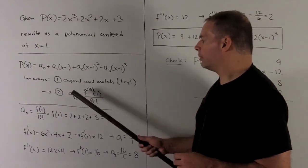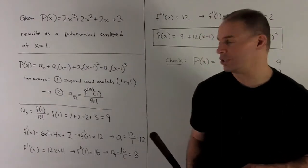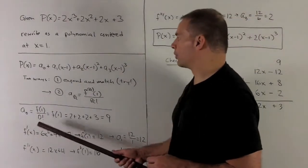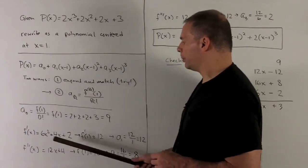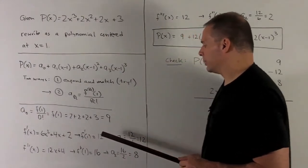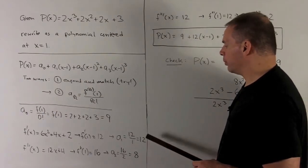All right. For a₁, take the first derivative, evaluate at 1, divide by 1 factorial, which is 1. First derivative is 6x² + 4x + 2. Put a 1 in there, that gives me 12. And then that gives me a₁ is 12 over 1, which is 12.